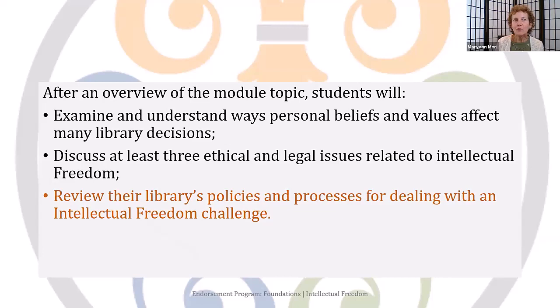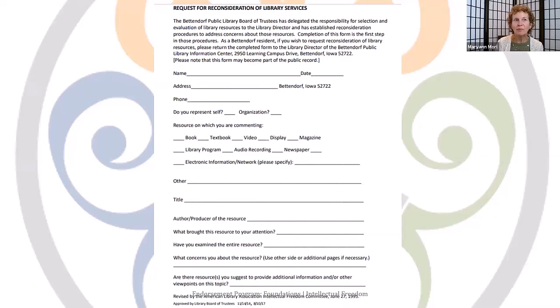Now let's look at some sample policies and discuss processes for dealing with an intellectual freedom challenge — also known as a reconsideration. Your library should have a reconsideration form in place, as well as a policy about the steps involved in reviewing a reconsideration request. This example is from an Iowa library. It is a standard form that asks for specific information about the item in question. Most libraries include the reconsideration form as part of their policies, and a copy should be readily available at the front desk. A standard form usually asks: why do you object to this item?